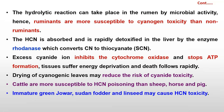After release, HCN is absorbed and rapidly detoxified in the liver, which converts cyanogen to thiocyanate. Excess cyanide ion inhibits cytochrome oxidase and stops ATP formation. Due to lack of ATP, tissues suffer energy deficiency, followed by death of the animal due to energy depletion.